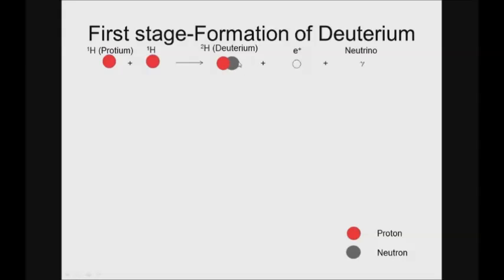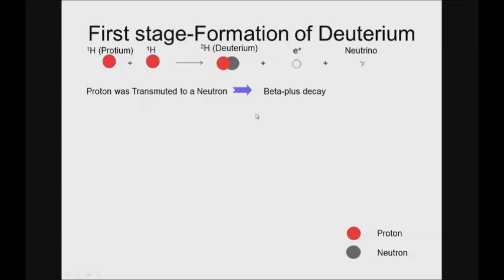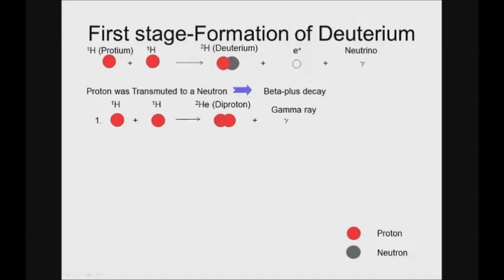The reason a neutron can be formed from two protons is because one of the protons is transmitted or transformed into a neutron. This occurred due to beta plus decay. We can look at beta plus decay in this reaction in two steps. Firstly, the two hydrogen-1 nuclei react, forming the nucleus of a diproton, which is a helium isotope with two protons and gamma rays. Next, beta plus decay occurs.